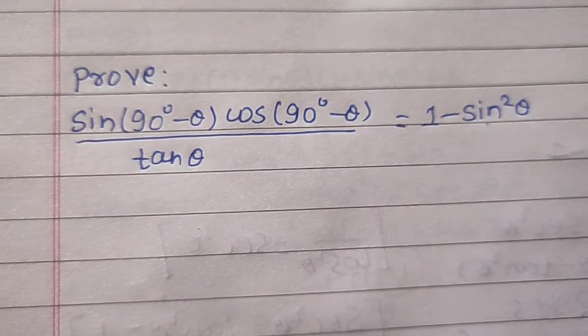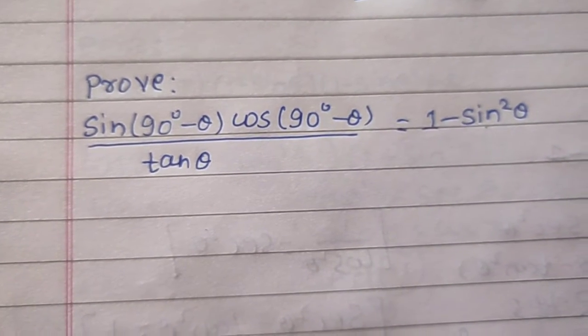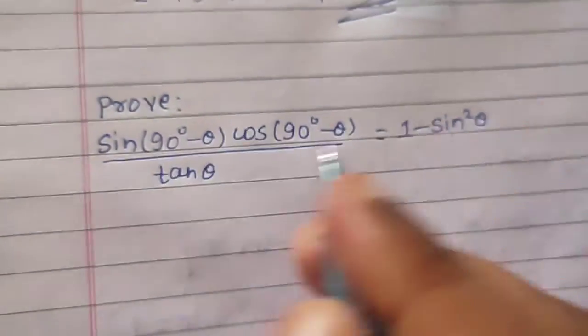We need to prove sin(90° - θ) × cos(90° - θ) / tan θ = 1 - sin²θ.